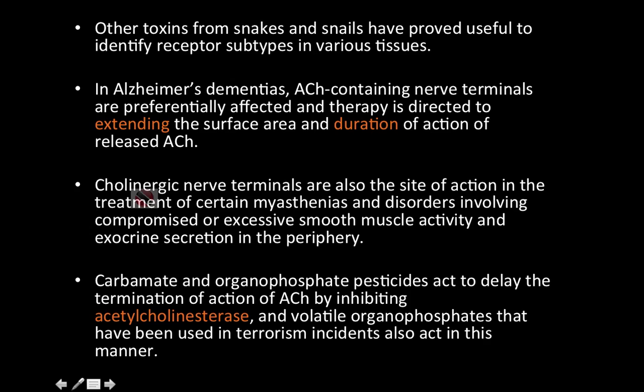Cholinergic nerve terminals are also the site of action in the treatment of certain myasthenias and disorders involving compromised or excessive smooth muscle activity and exocrine secretion. Carbamate and organophosphate pesticides act to delay the termination of action of acetylcholine by inhibiting acetylcholinesterase, and volatile organic phosphates used in terrorism incidents also act in this manner. The term cholinergic is used for any neuron that uses acetylcholine as its neurotransmitter.